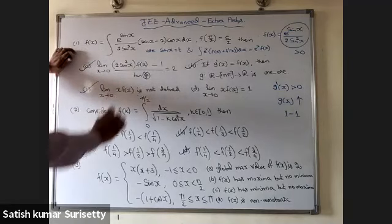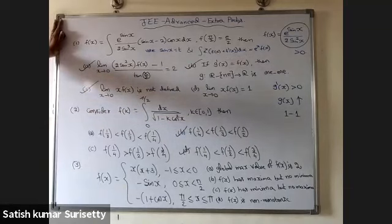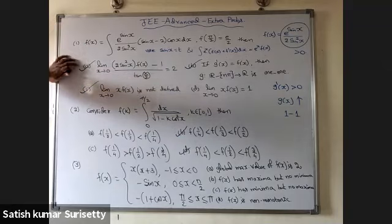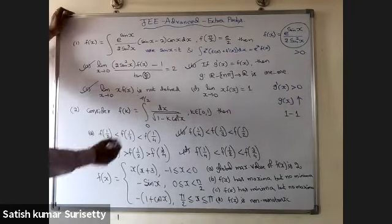For the first problem, use substitution sin x = t and the formula ∫ eˣ[f(x) + f′(x)] dx = eˣ·f(x). You get f(x) = e^(sin x) / (2 sin²x). Substituting into the first option gives value 2; f(x) > 0, so g′(x) > 0, meaning g(x) is increasing and hence 1-to-1. Also x·f(x) as x → 0⁺ is not defined differently. So options are A, B, C.